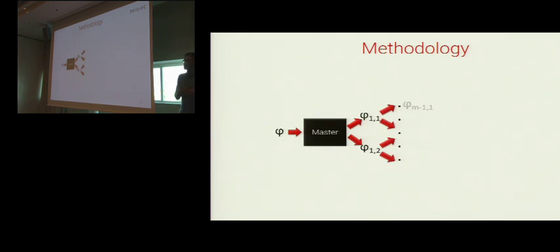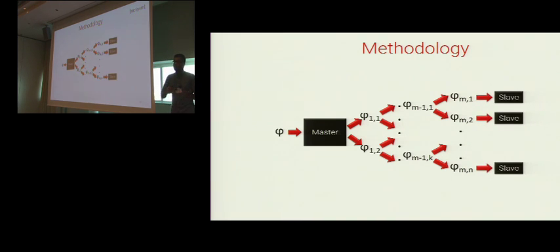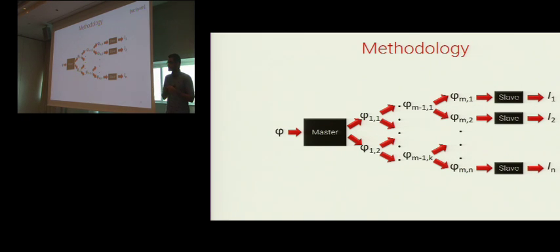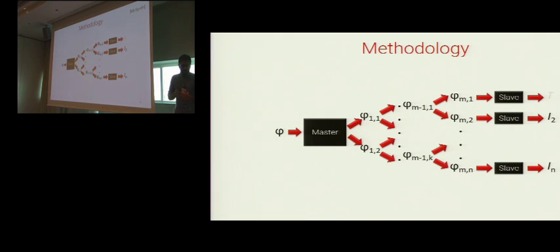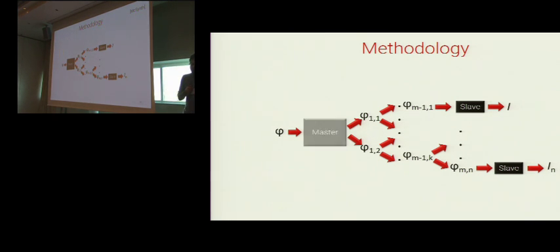MixSynth counters this huge search space by using a master-slave architecture. The master splits the input QFBV formula into several independent sub-formulas. Each sub-formula is given to a slave synthesizer, which synthesizes the instruction sequence that implements it. The master concatenates the results produced by the slaves and returns the final implementation. If any one of the slaves times out, an alternative split is tried. If all possible splits of a sub-formula time out, the entire sub-formula is given to a slave synthesizer. I will first describe how the master splits the input formula, then how the slaves perform the actual synthesis.